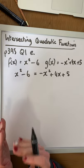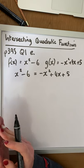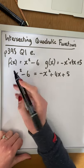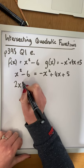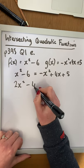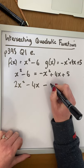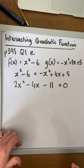Bringing everything, so remember, to solve a quadratic, we need to bring everything to one side. So minus x squared comes across, becomes plus x squared. So we have 2x squared. We have minus 4x. That becomes minus 5. So that is minus 11, and that is equal to 0.